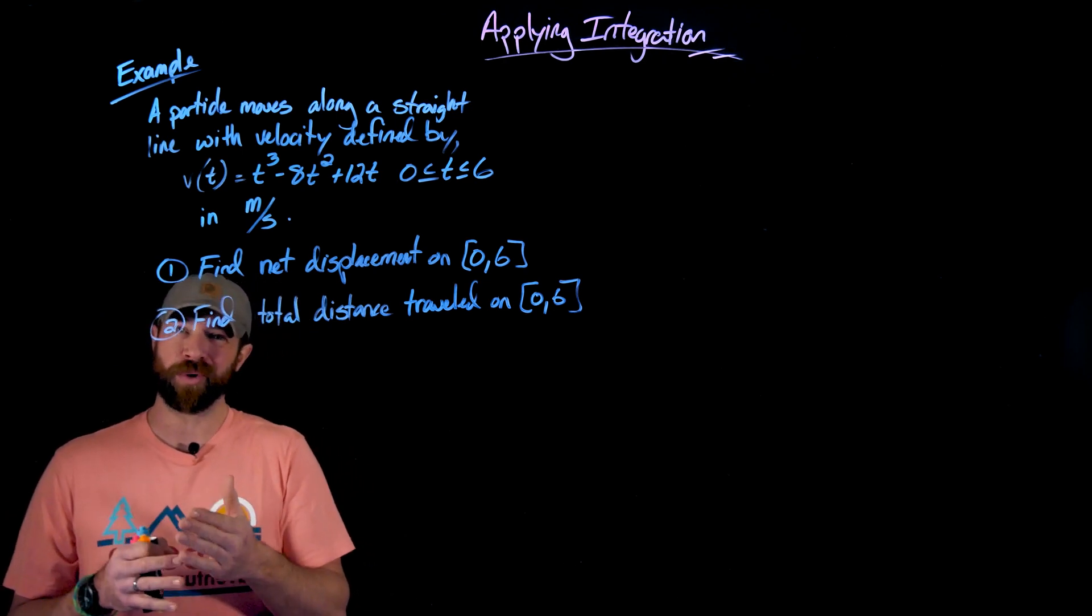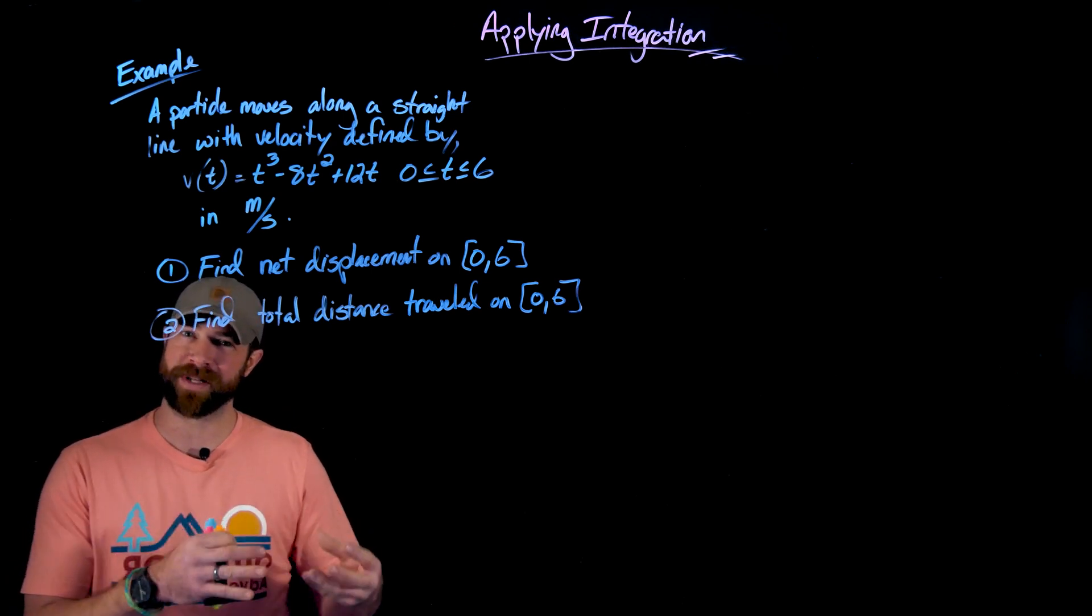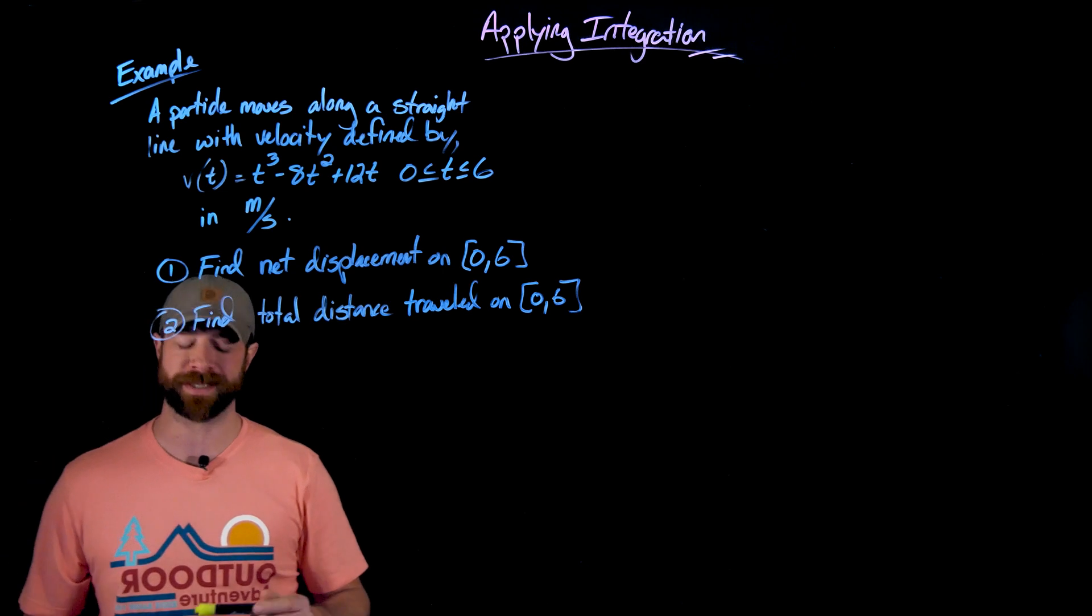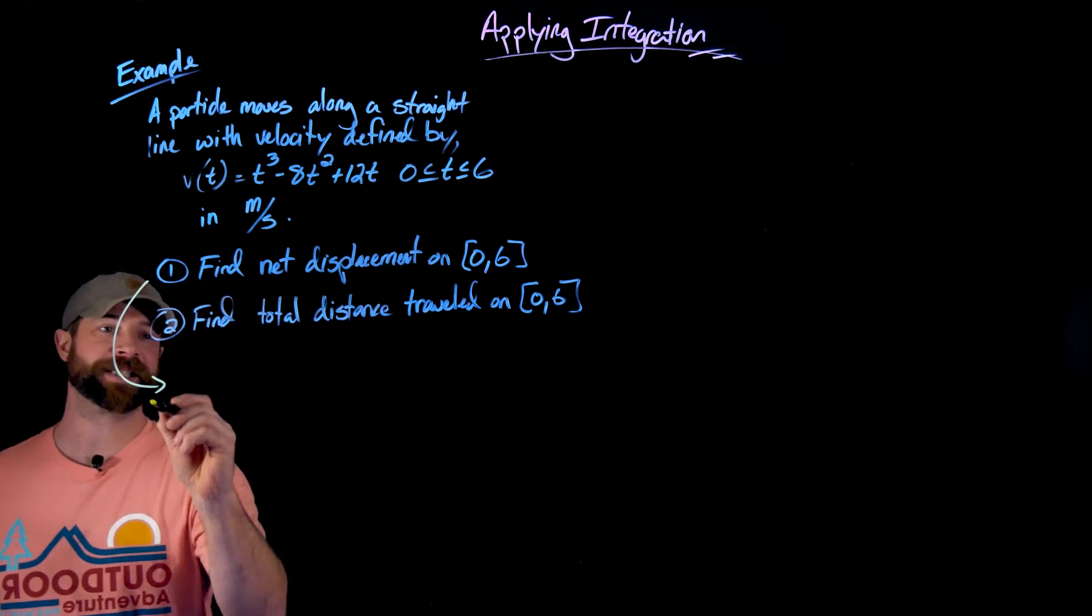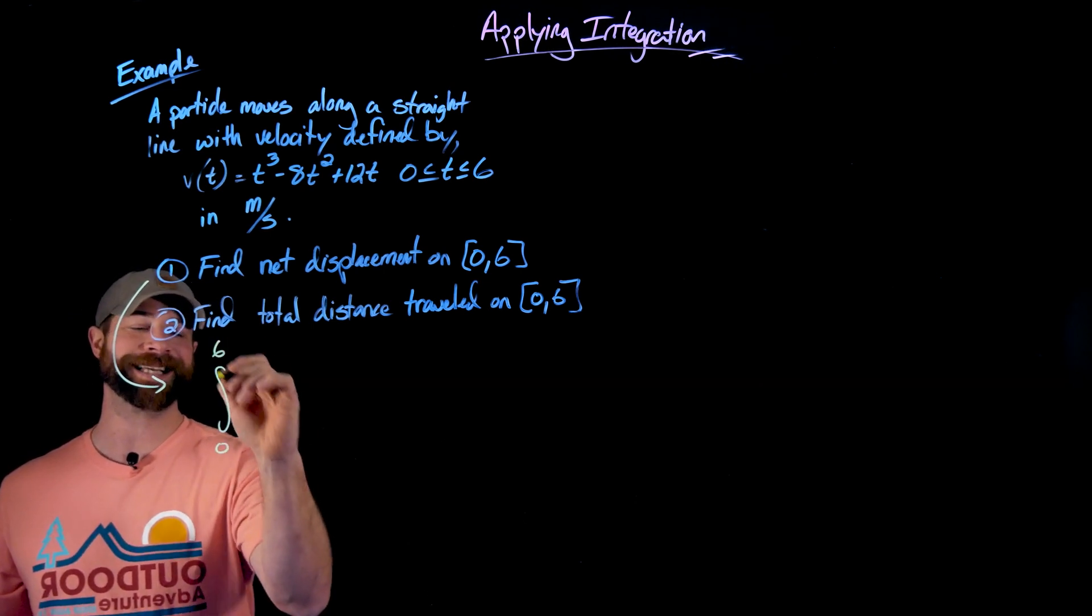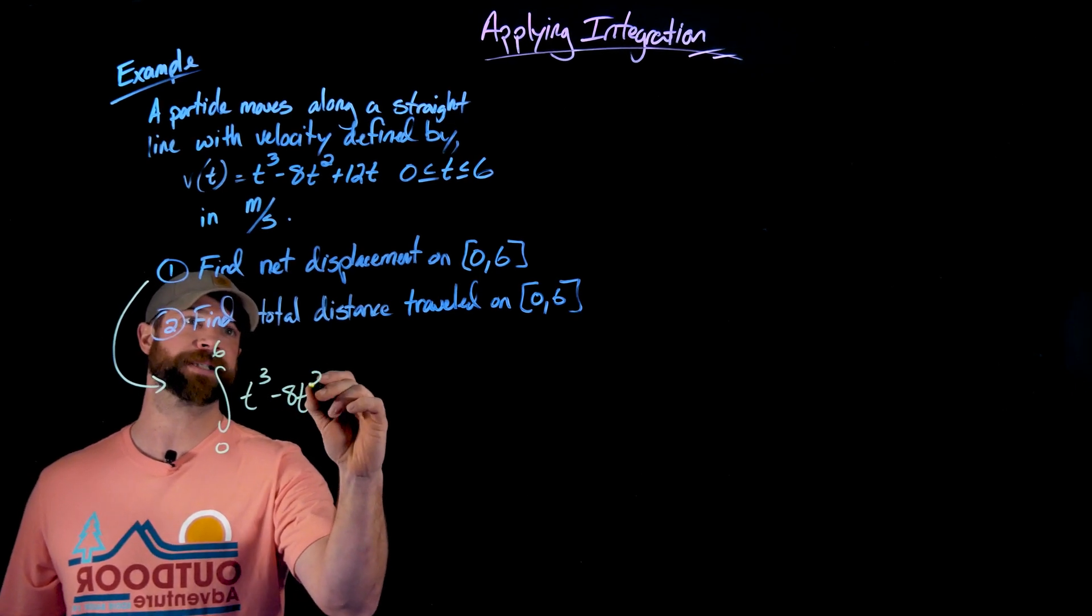What you'll find almost always is that finding the net displacement is really straightforward. It's just integrating on the interval. The tricky part we'll be dealing with is the absolute value in the total distance. But first, let's deal with this net displacement. So in this case, to find the net displacement, given this velocity function, we just need to integrate it on this interval from zero to six.